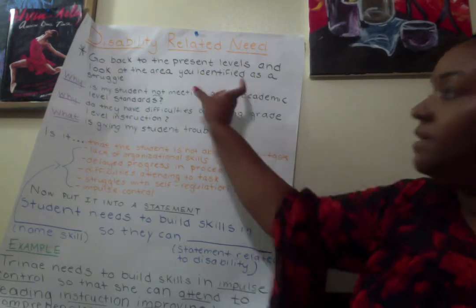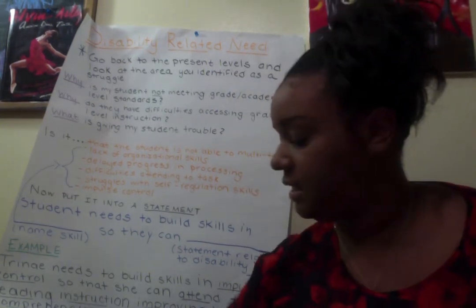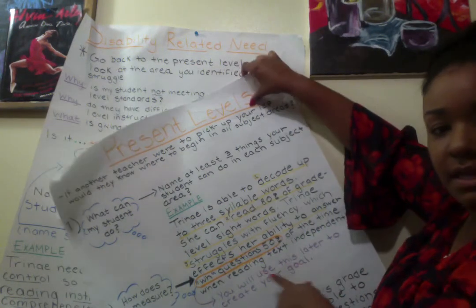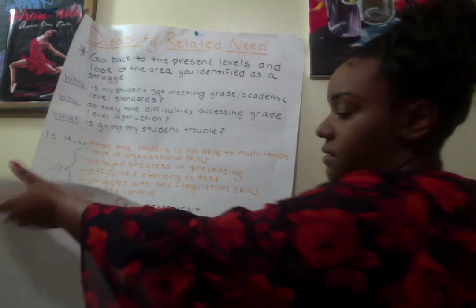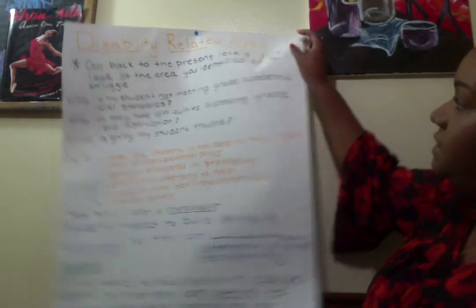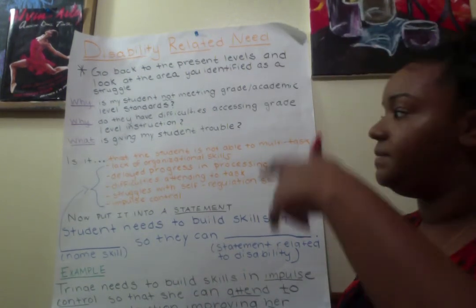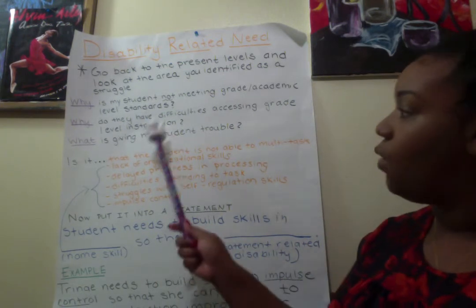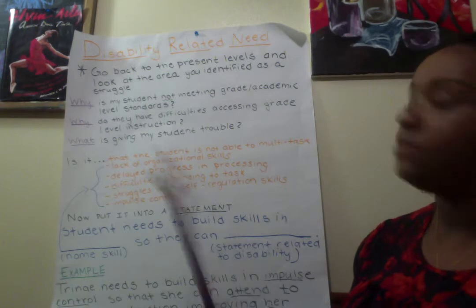You're going to go back to present levels and look at the area you identified as a struggle. We identified that Trinae struggles with fluency, which affects her ability to answer WH questions — and we wrote that as a placeholder because it's going to come back up when we talk about goals. They say ask the five whys, but for these purposes you can answer three questions: Why is my student not meeting grade-level academic standards? Why do they have difficulties accessing grade-level instruction? And what is actually giving my student trouble? That is the disability related need.